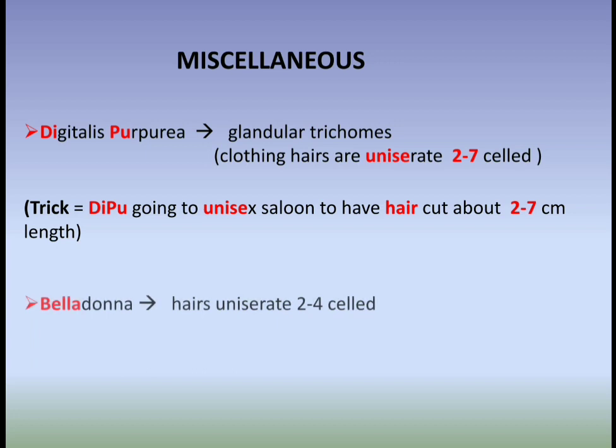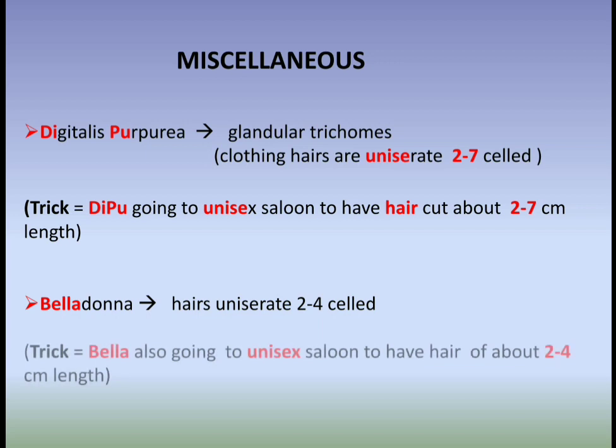For Belladonna, hairs are unicellate and two to four cells. The trick is: 'Bella also going to Unisex saloon to have a haircut of about two to four centimeter length.'